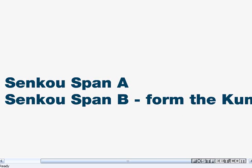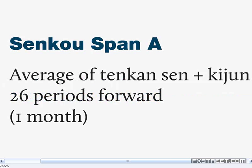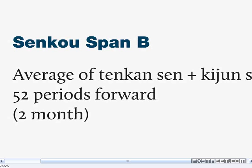Senkospan A and Senkospan B are the lines that form the Kumo, which is the cloud. Senkospan A is the average of the Tenken Sen and the Kijin Sen plotted 26 periods forward. The reason it's 26 periods forward is because in a Japanese calendar the month is 26 periods — they work Saturdays. Senkospan B is the average of the Tenken Sen and the Kijin Sen 52 periods forward, or two months.